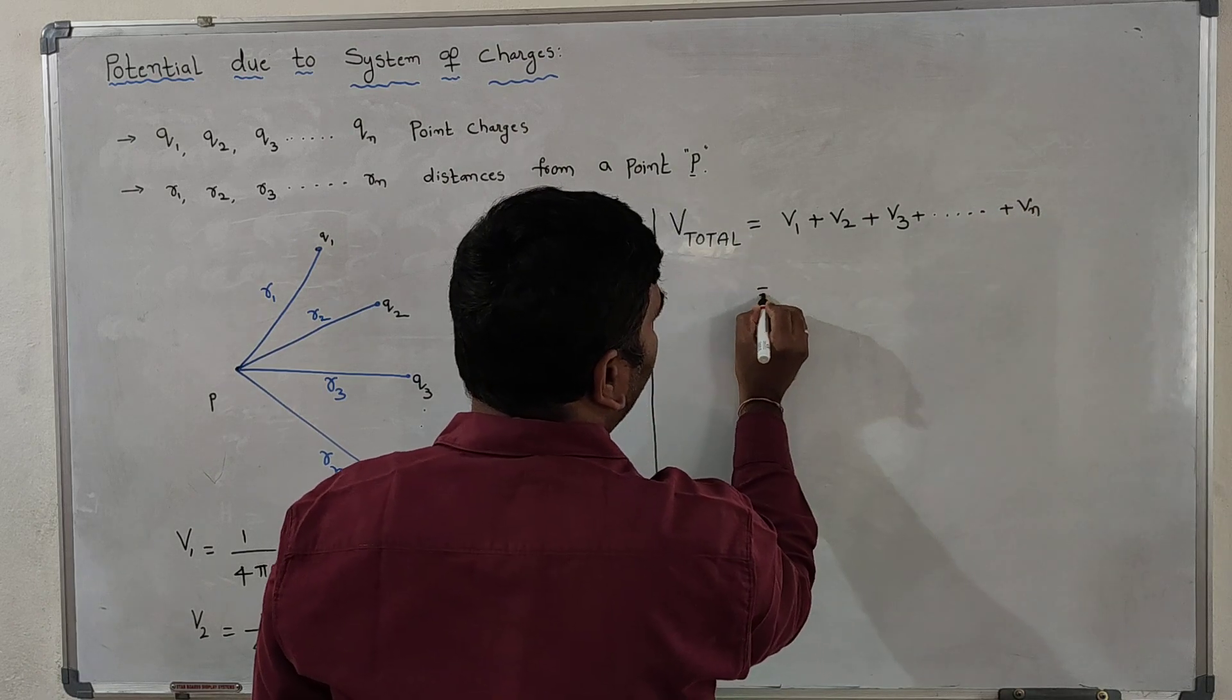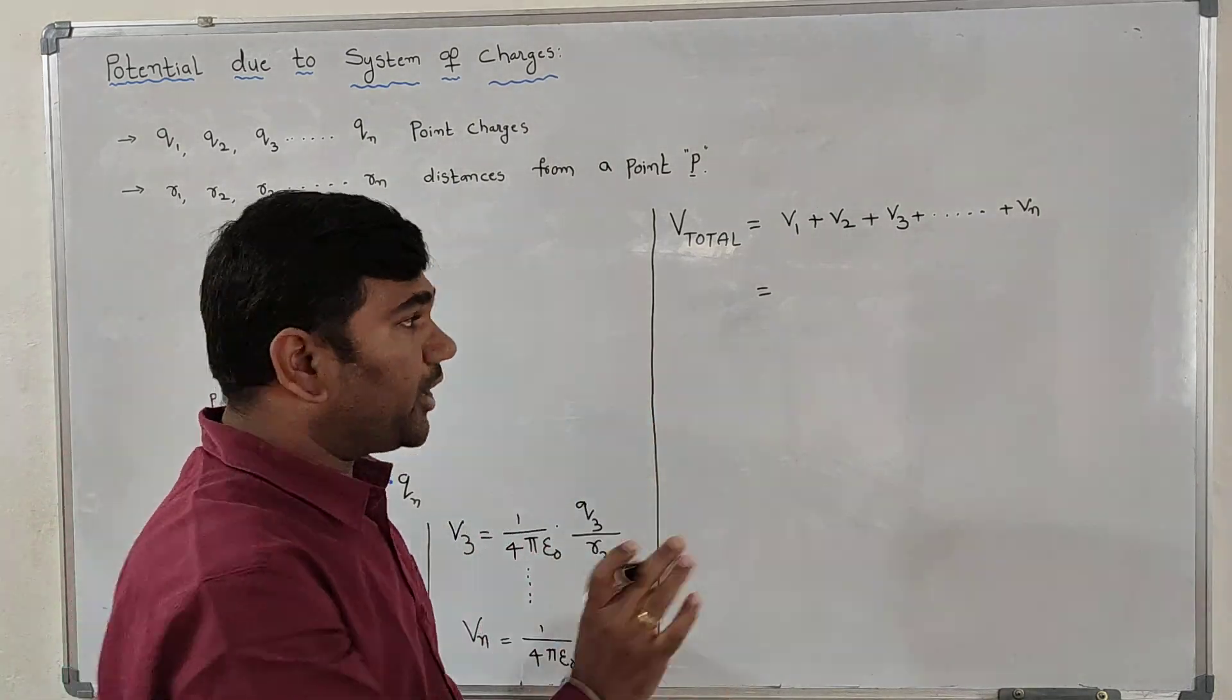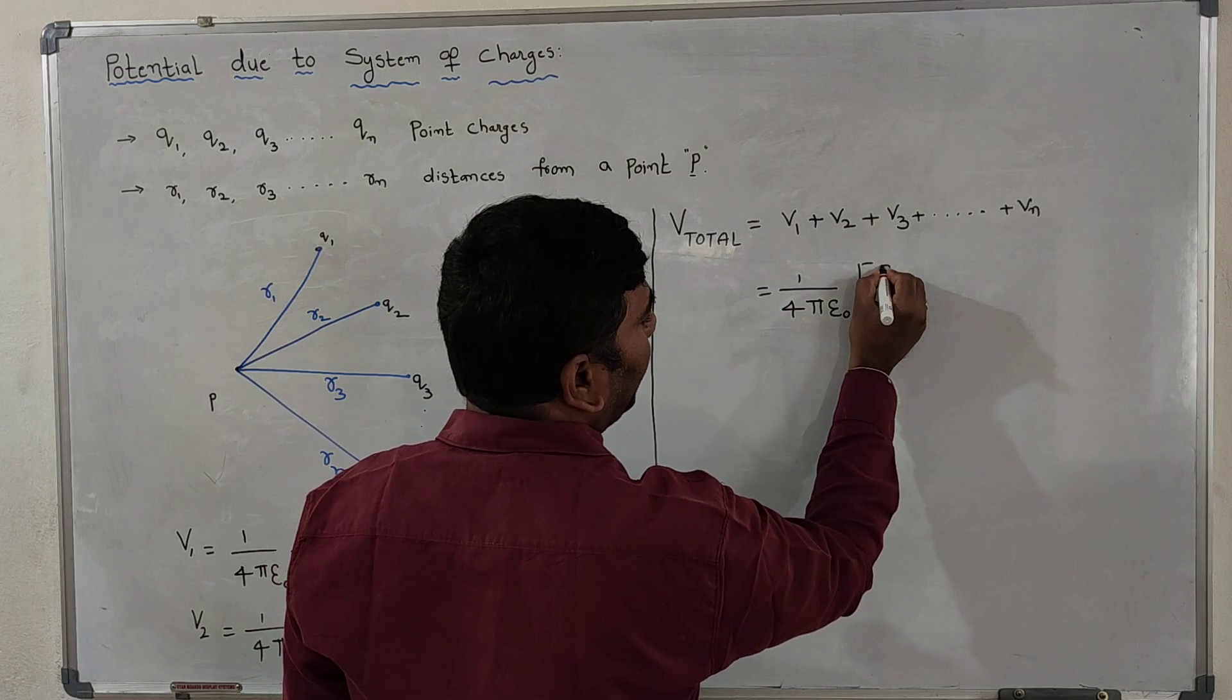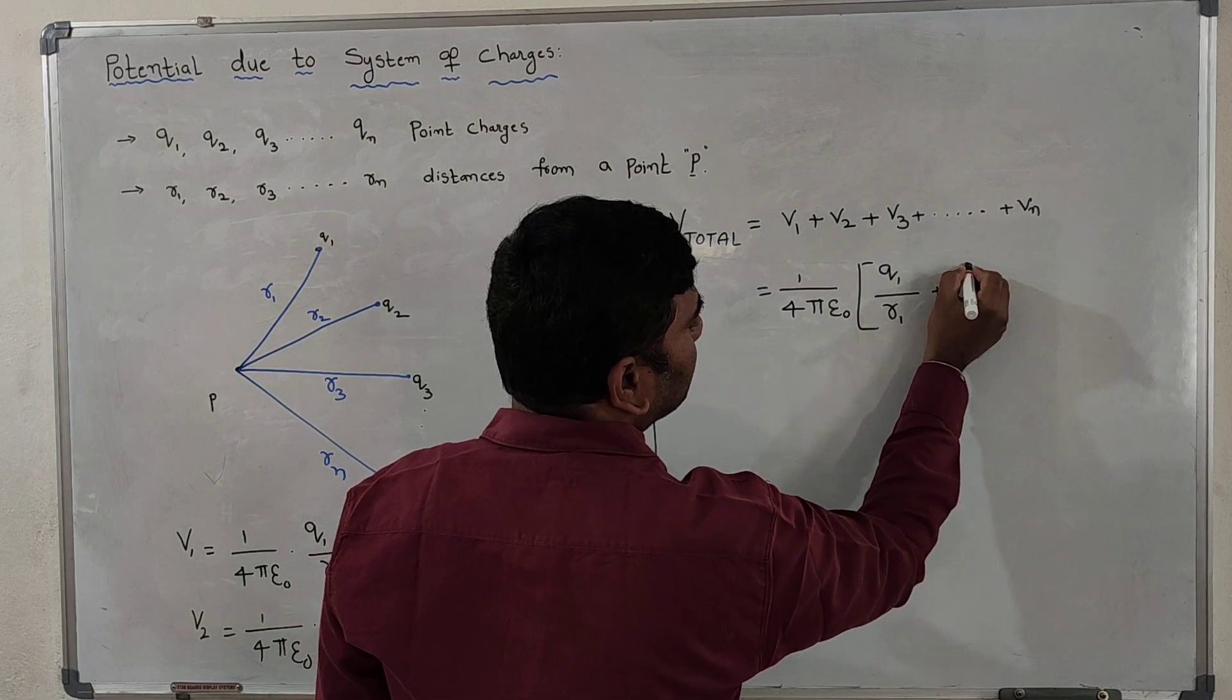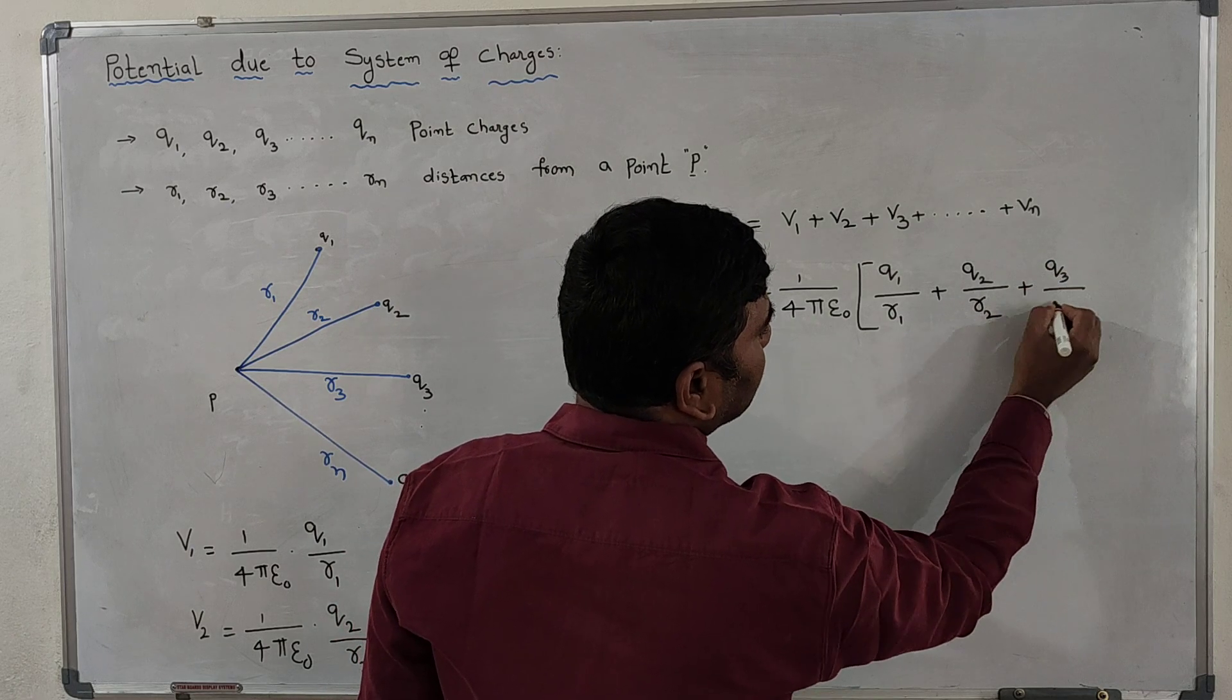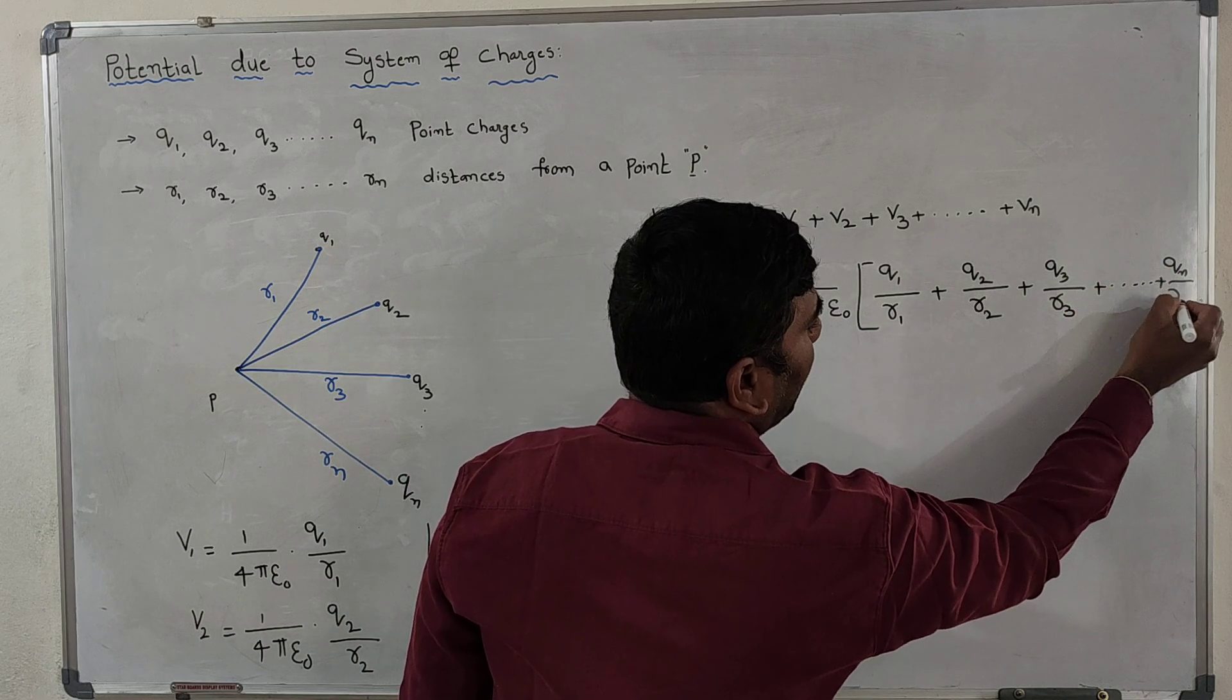We can write V1 plus V2 plus V3 plus up to Vn. Now if we add all these things, 1 by 4πε₀ is common everywhere in all the potentials. So let us take 1 by 4πε₀ common. Then in the bracket, we have Q1 by R1 plus Q2 by R2 plus Q3 by R3, up to Qn by Rn.